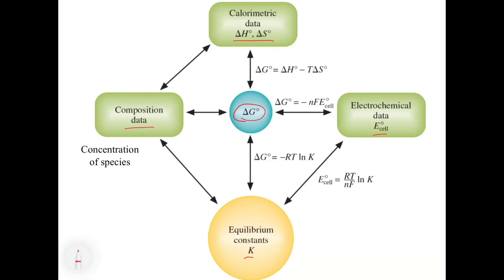And you'll notice that they've added an extra line here for the equation that we just derived, which is that E cell is equal to RT over nF ln K. So you can see that there's a direct link between the equilibrium constant and the electrochemical data through that equation that we just derived.